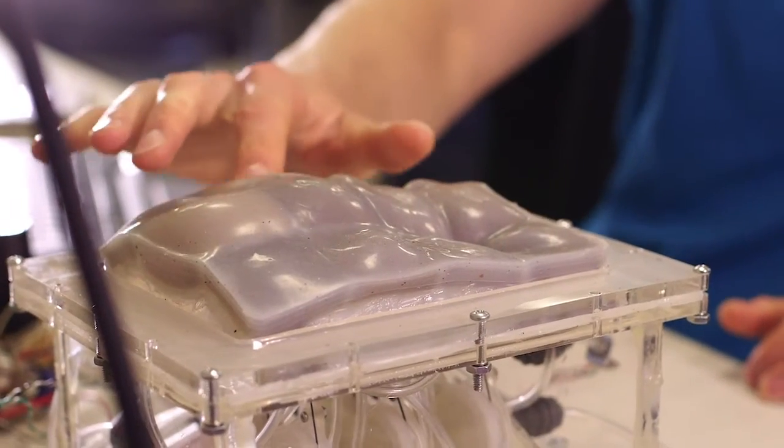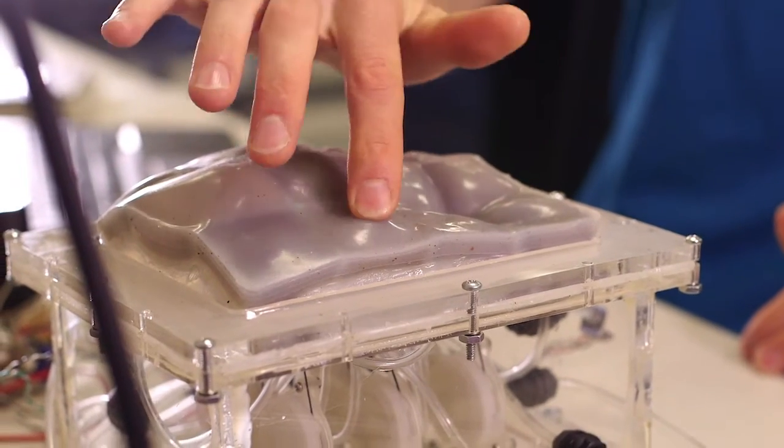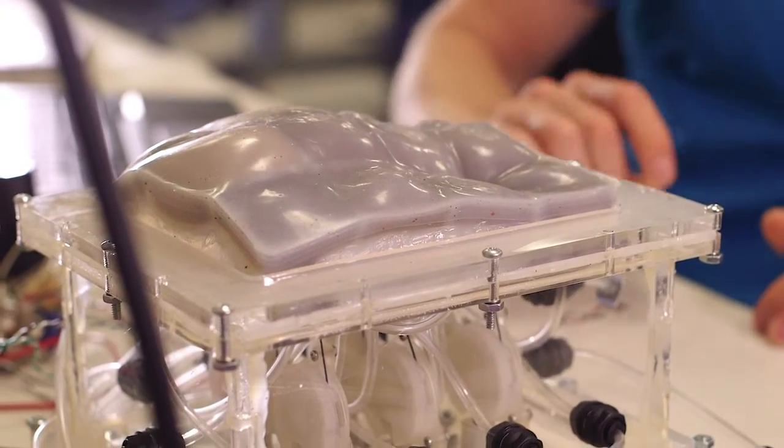And so you can see some of the cells are still soft whereas other ones are rigid and kind of hold the shape that they were vacuumed in.